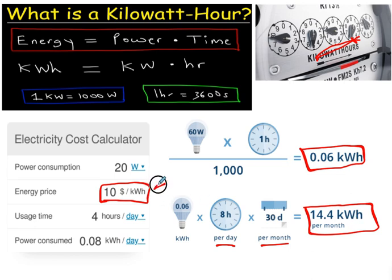If you're paying those astronomical prices, that's $144 every single month just to leave that light on — that's why they're screaming. But usually energy prices are like 10 cents, not $10, which means you'd actually only be paying $1.44 for a month to leave the lights on. But if we use the higher price, it justifies screaming at my own kids for leaving the lights on.